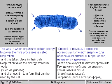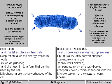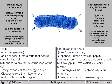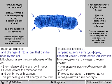The way in which organisms obtain energy to power their life processes is called respiration, and this takes place in their cells. Respiration takes the energy stored in foods, such as glucose, and changes it into a form that can be used by the cell.